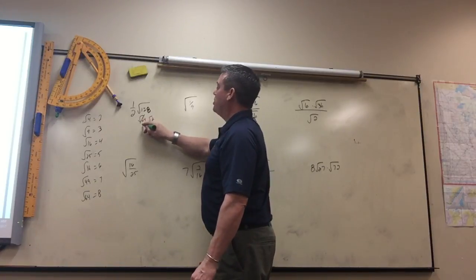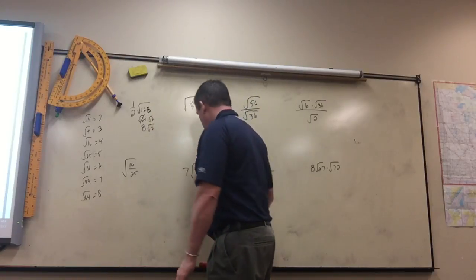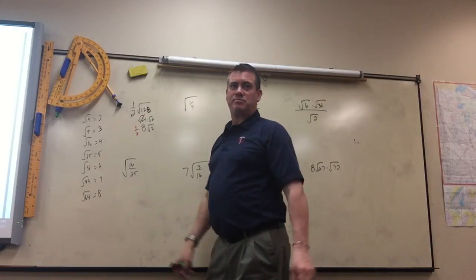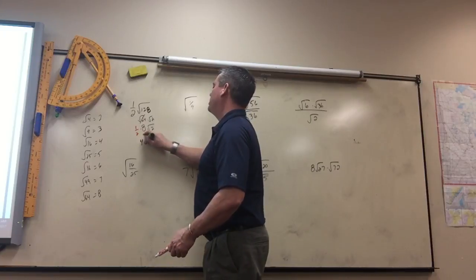So the square root of 64 is 8. So this turns into 8 square roots of 2. But then don't forget, there's a 1 half times that. So half of 8 is 4. So that's 4 square roots of 2.